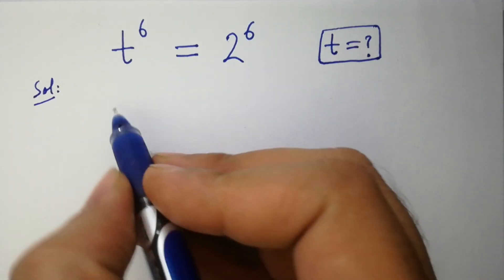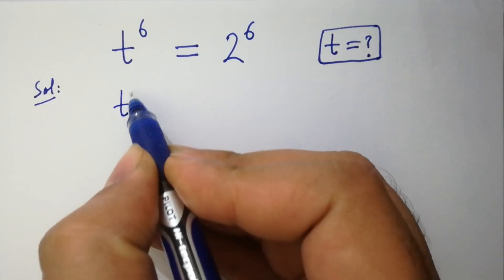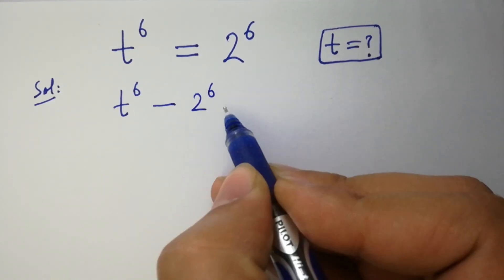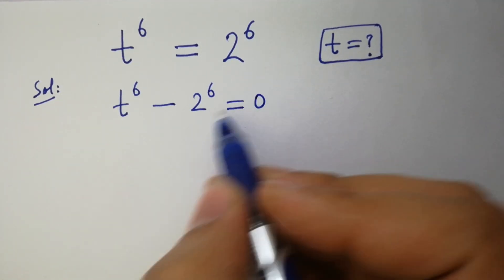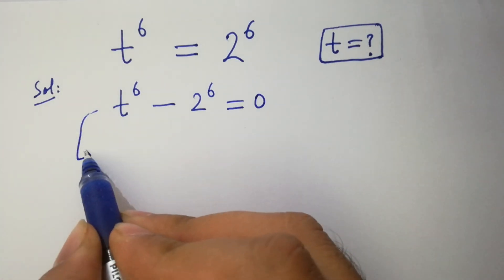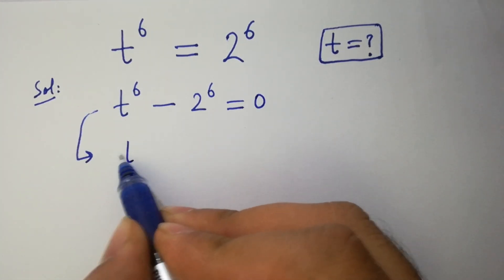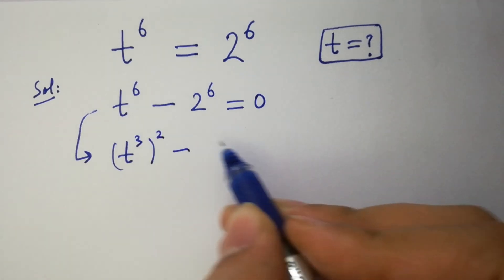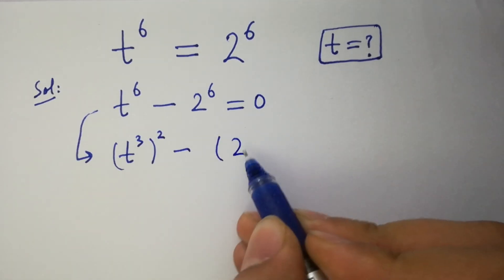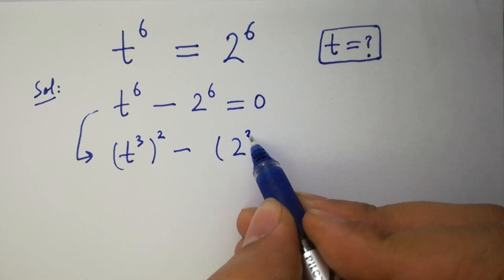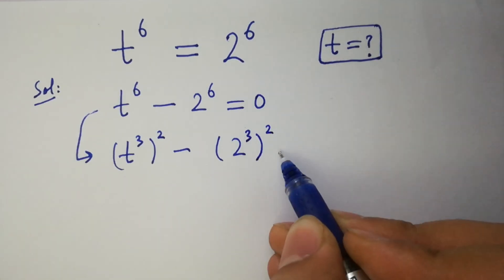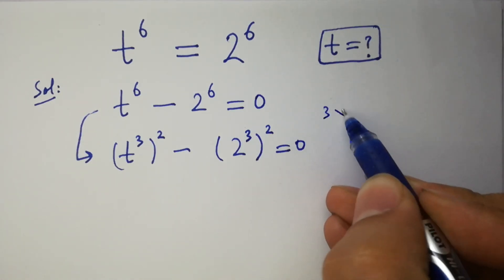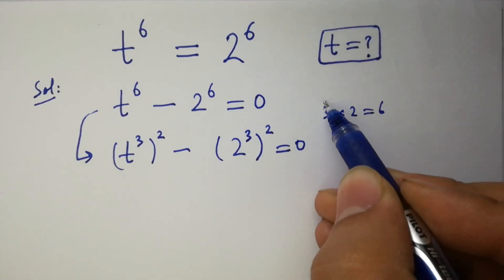It can be written as t to the power 6 minus 2 to the power 6 equal to 0, which is the same as t to the power 3, to the whole power 2, minus 2 to the power 3, to the whole power 2, equal to 0, since 3 times 2 equals 6.